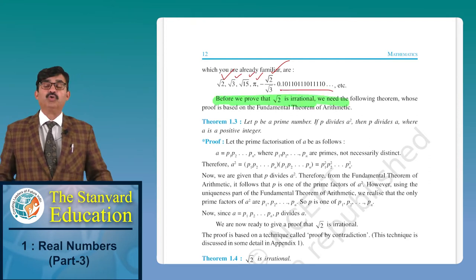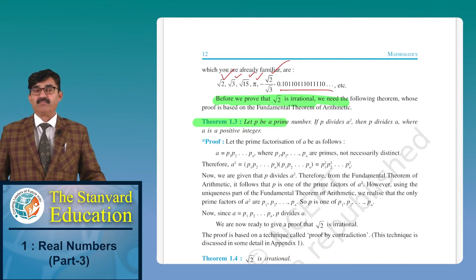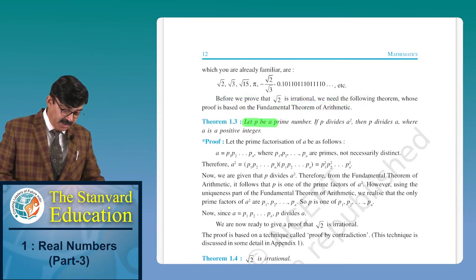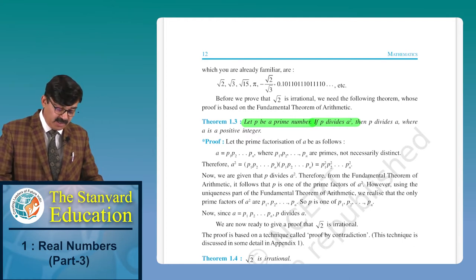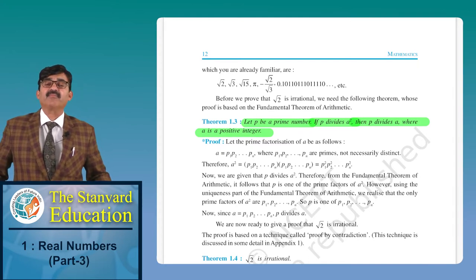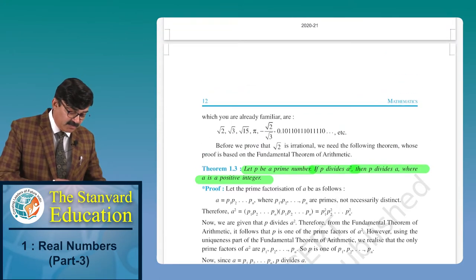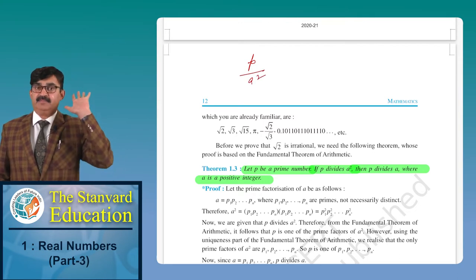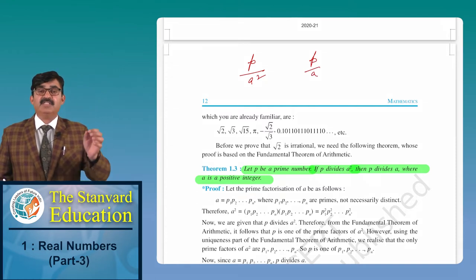Now we want to prove that root 2 is irrational, but before that let us read Theorem 1.3. It states: Let p be a prime number. If p divides a², then p divides a also, where a is a positive integer. In simple language: if a prime number p is divisible by a², then it will also be divisible by a.